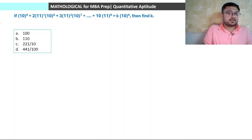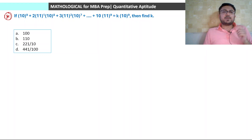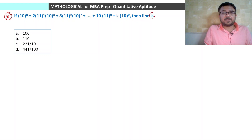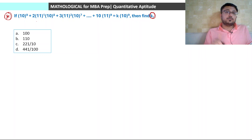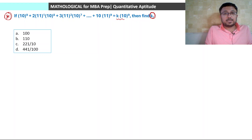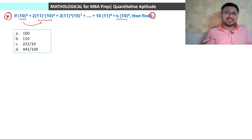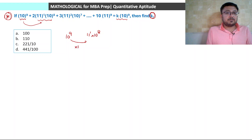One more very interesting question: find the value of k, given that 10⁹ + 2·11¹·10⁸ + 3·11²·10⁷ + ... + 10·11⁹ = k·10⁹. Observe: each term multiplies the previous by 11/10, so the GP ratio is 11/10, while the coefficients 1, 2, 3, ..., 10 form an AP. To simplify, divide the entire expression by 10⁹, which gives: k = 1 + 2·(11/10) + 3·(11/10)² + ... + 10·(11/10)⁹.